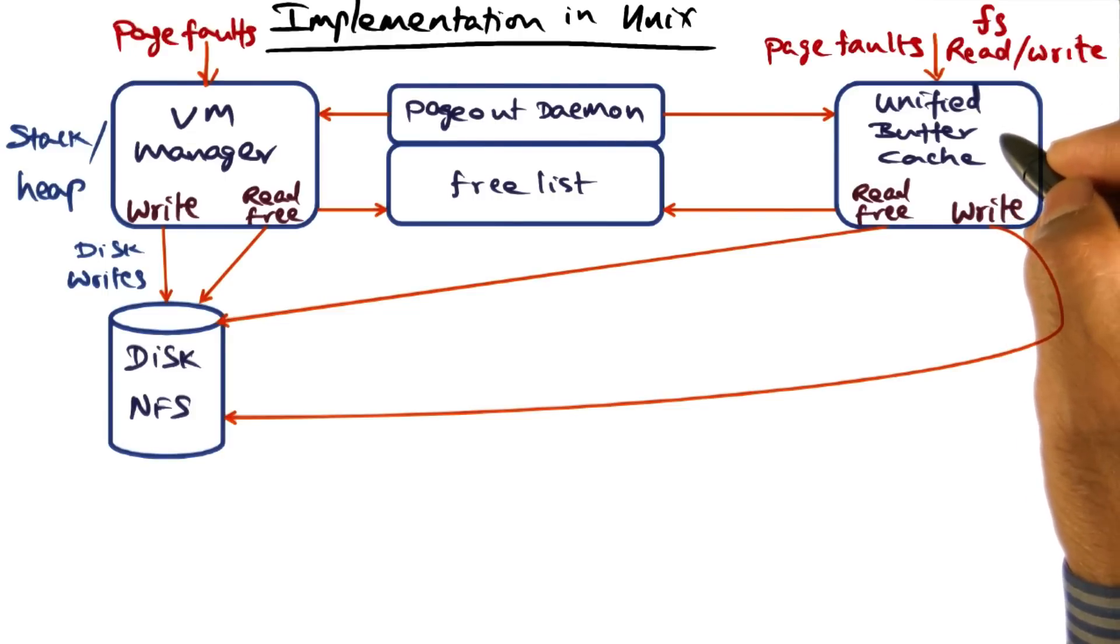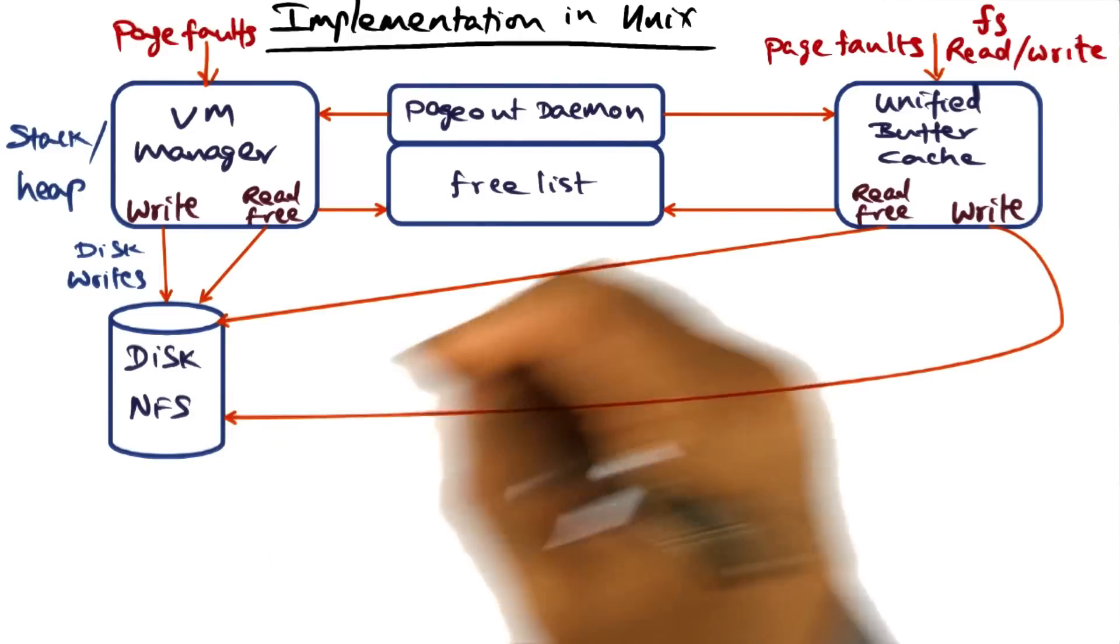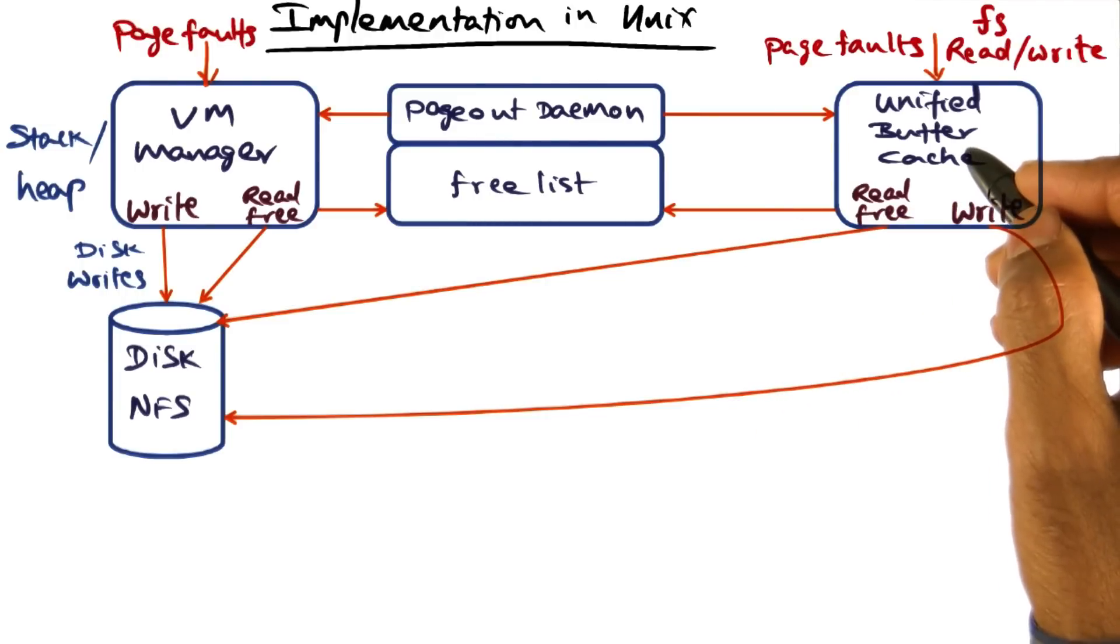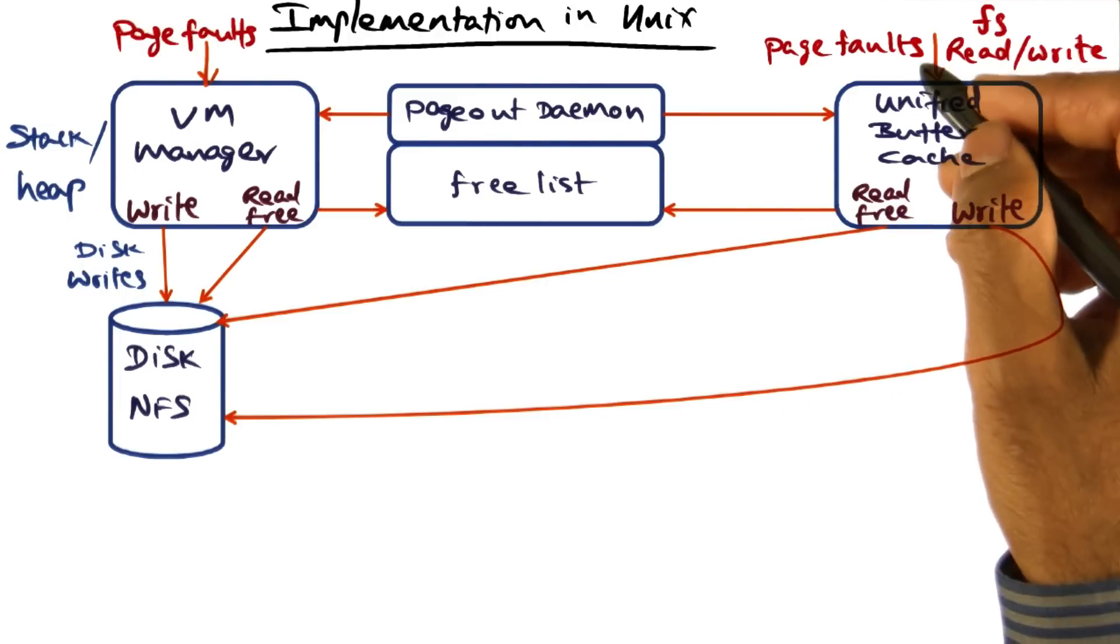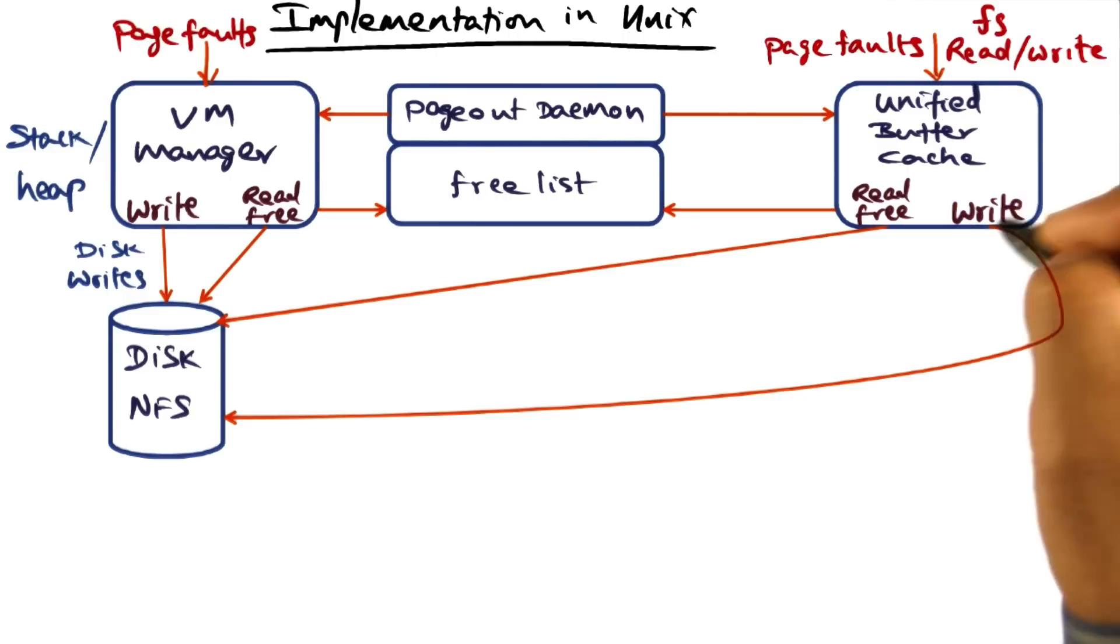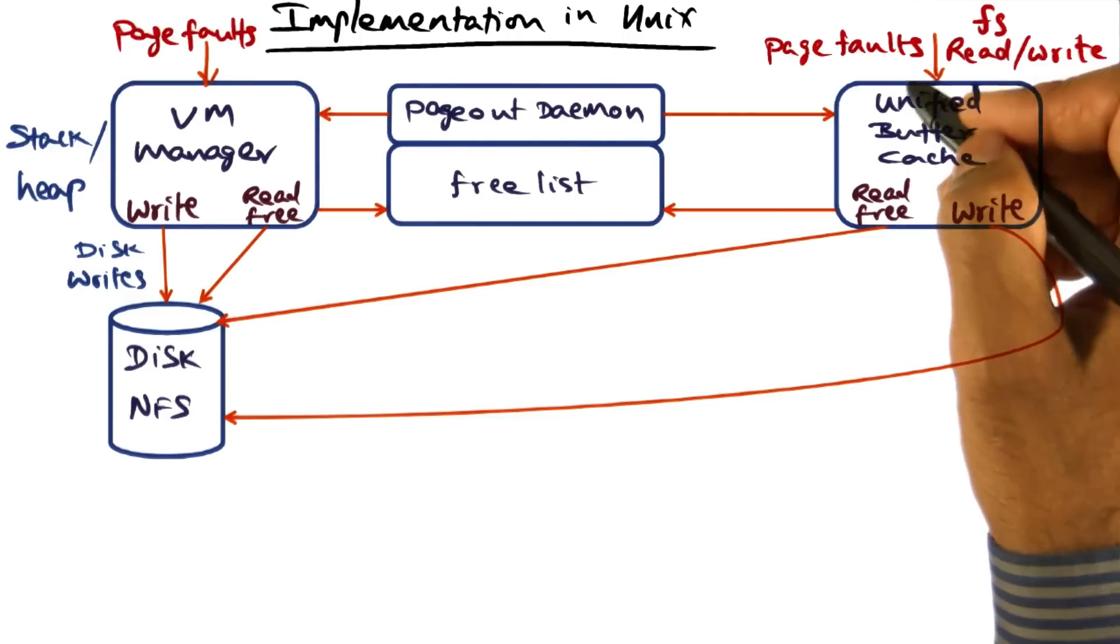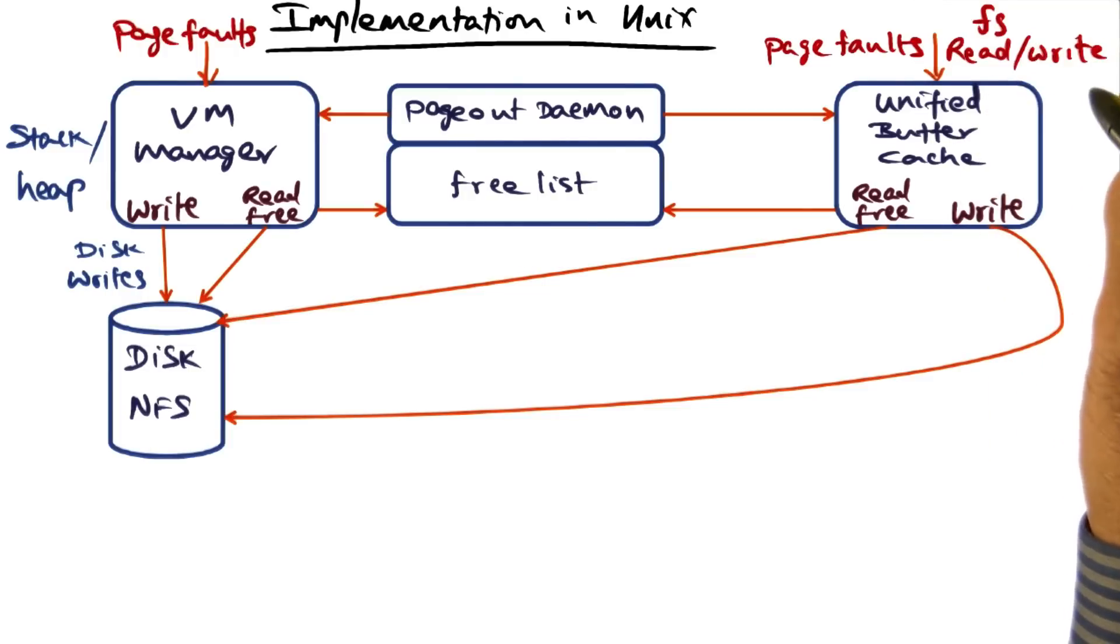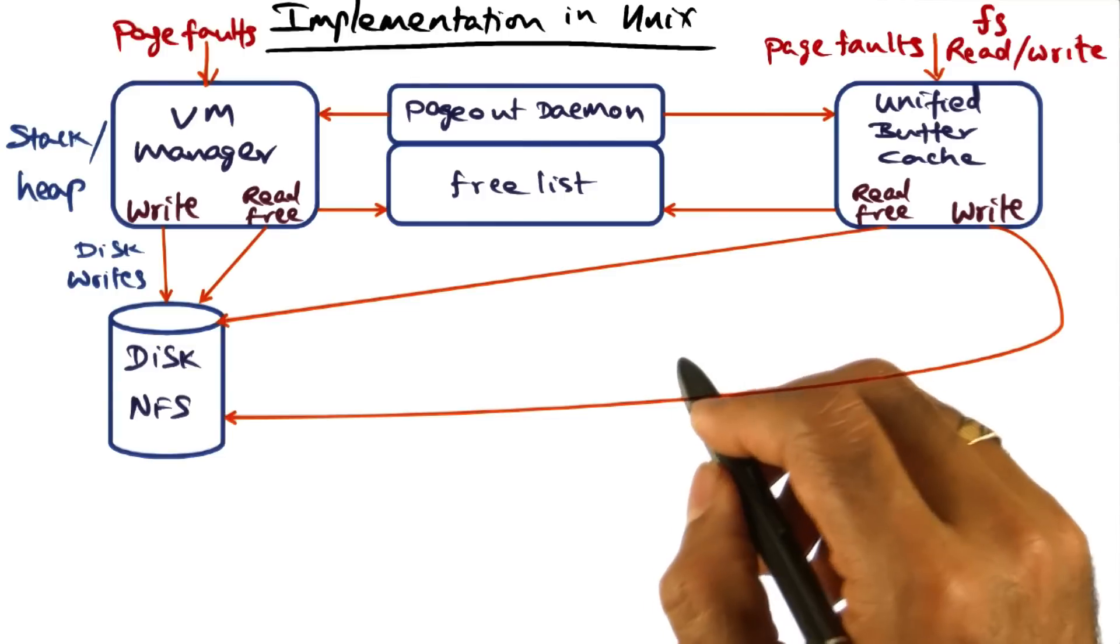In addition to that, Unix systems offer the ability to map a file into memory, which is called memory mapped files. And if you have a memory mapped file, you can also have page faults to a file that has been mapped into memory. So the unified buffer cache is responsible for handling page faults to mapped files as well as explicit read and write calls that an application process may make to the file system.